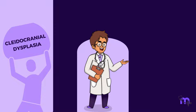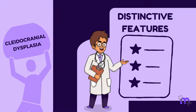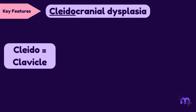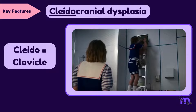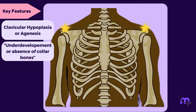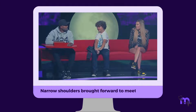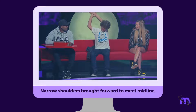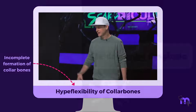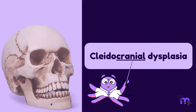Individuals with cleidocranial dysplasia display a range of distinctive features. One of the interesting ones comes from the name itself. The first part, 'cleido,' means clavicle. Remember Dustin squeezing through the vents? The condition involves clavicular hypoplasia or agenesis, which is the underdevelopment or absence of the collarbones. As you can see from the actor's picture, he has narrow shoulders that can be brought forward to meet the midline. The incomplete formation of the collarbones also leads to hyperflexibility.